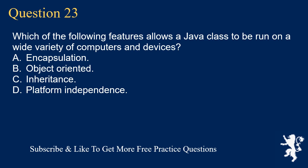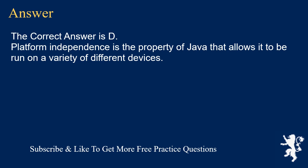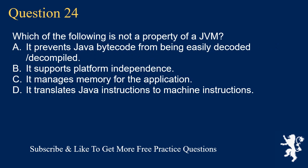Question 23: Which of the following features allows a Java class to be run on a wide variety of computers and devices? A) Encapsulation, B) object-oriented, C) inheritance, D) platform independence. The correct answer is D. Platform independence is the property of Java that allows it to be run on a variety of different devices.